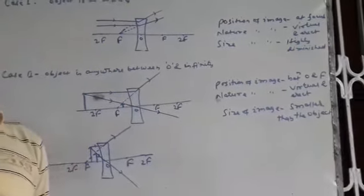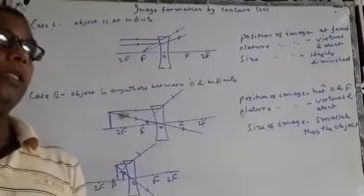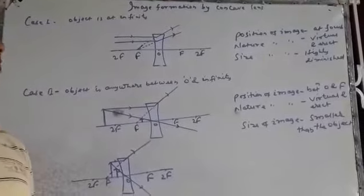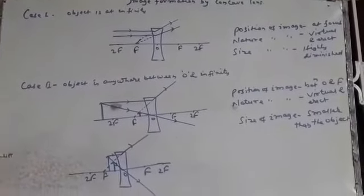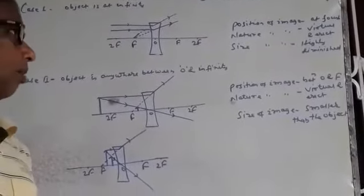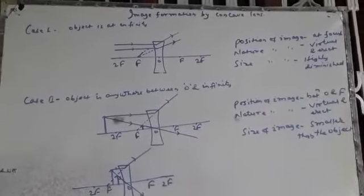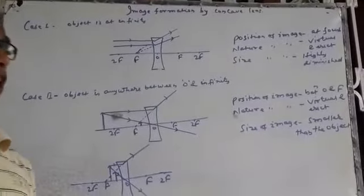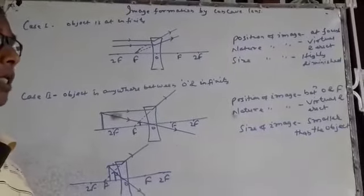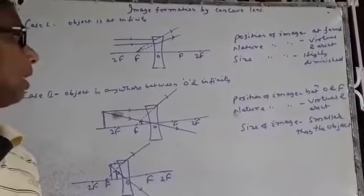Good morning, students. Today I am going to explain image formation by concave lens with ray diagram, position of image, nature of image, and size of image. There are only two cases of image formed by concave lens.